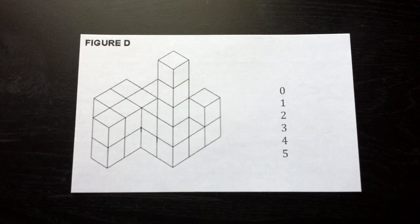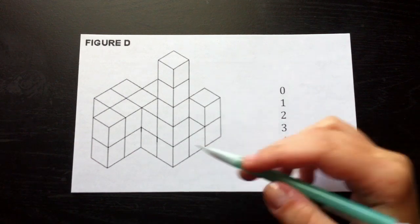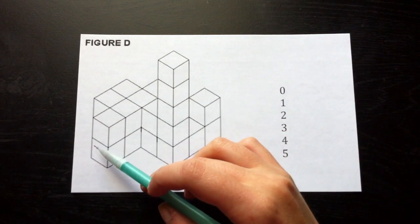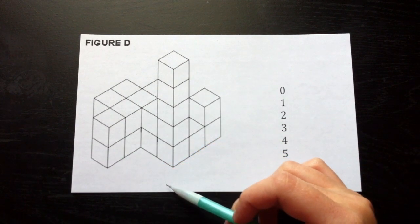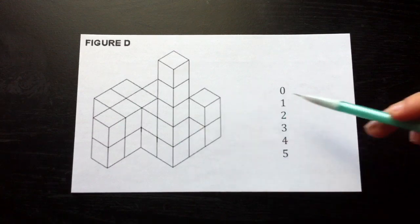To solve this cube counting question, first tally up each cube based on the number of sides that are exposed. We will start from the left, to the right, moving up, and then backwards.